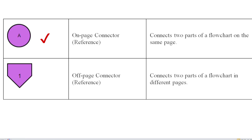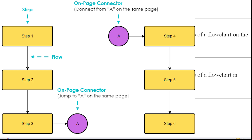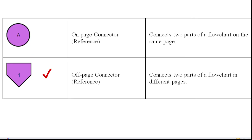Then another symbol is the On-Page Connector. We can use it to connect different parts of a flowchart that are on the same page. Then there is the Off-Page Connector, also called a Reference Symbol. It connects two parts of a flowchart that are on different pages.